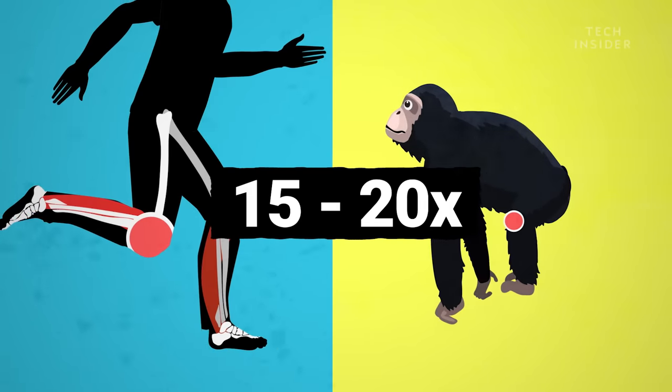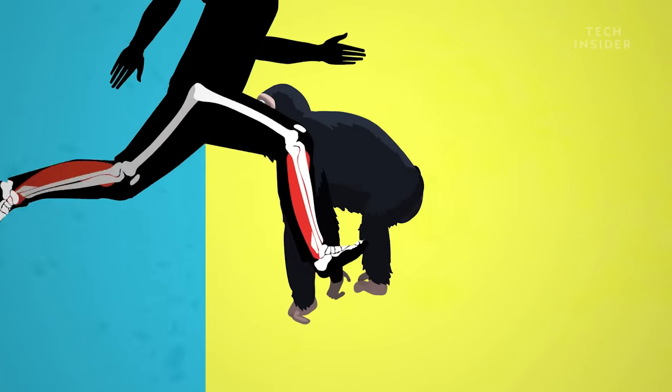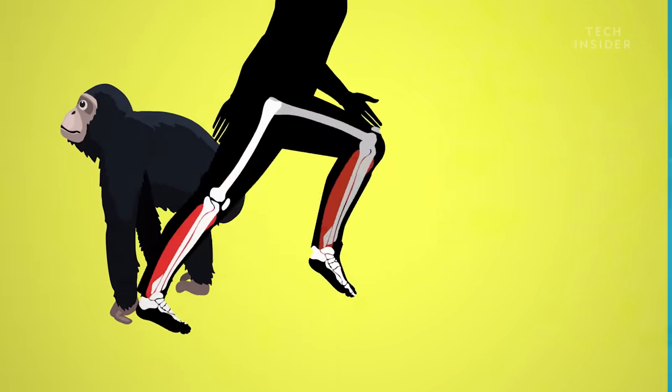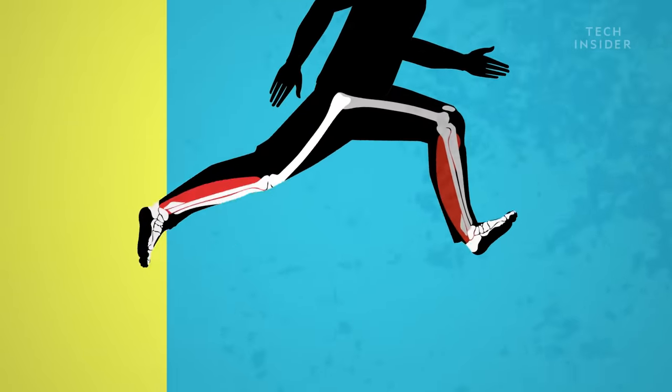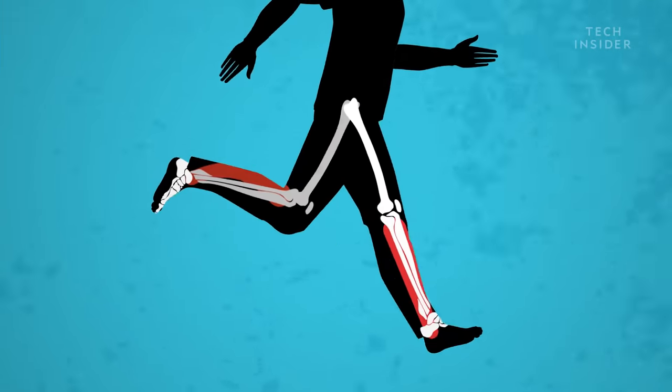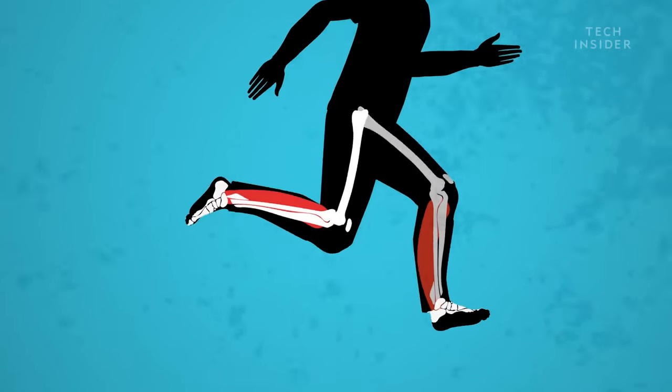When it comes time to step off, those springy tendons can turn 50% of that elastic pogo stick energy back into kinetic, making it easier to propel forward. Without that extra energy, we'd have to exert that much more effort just to take a step.